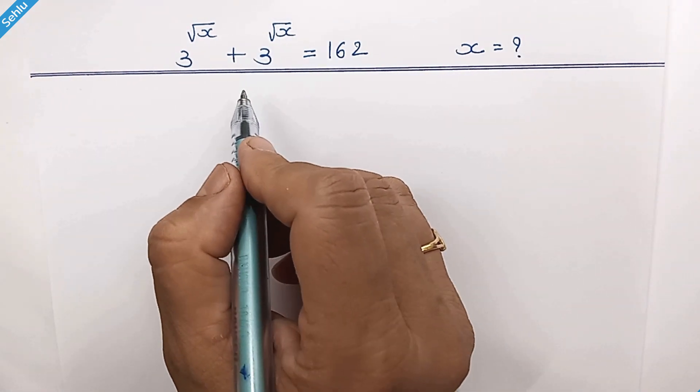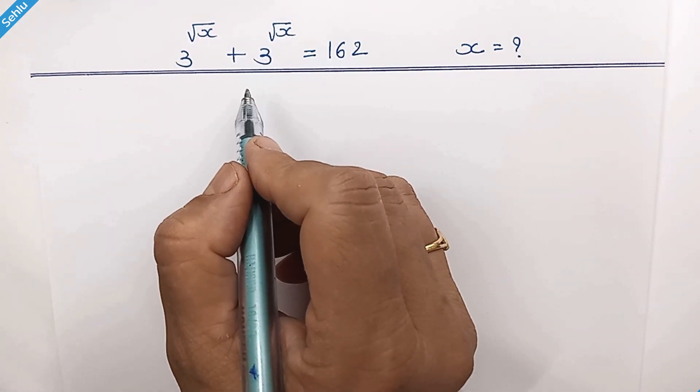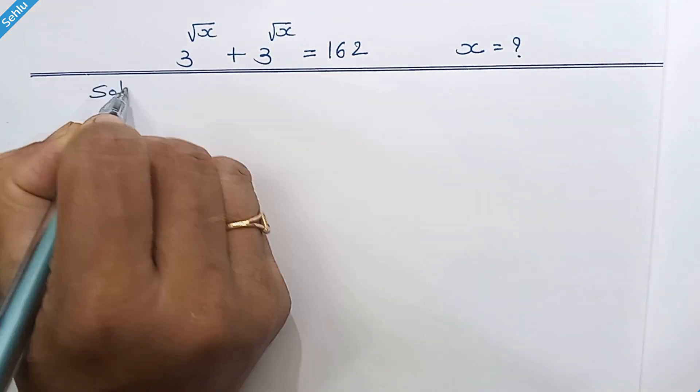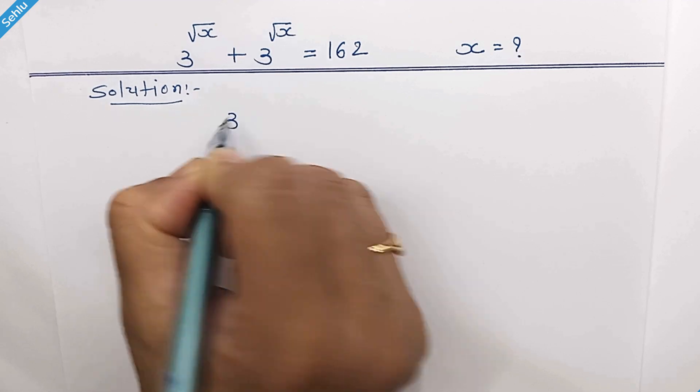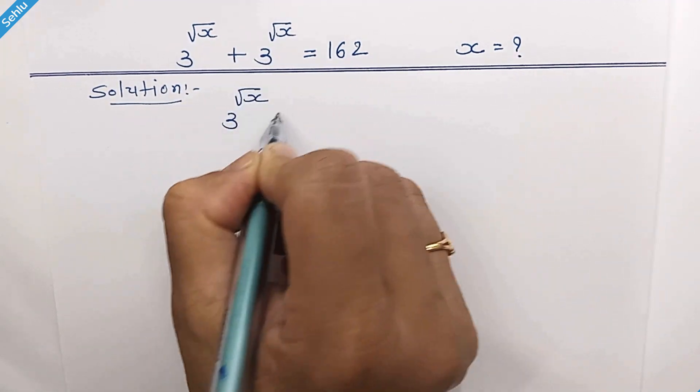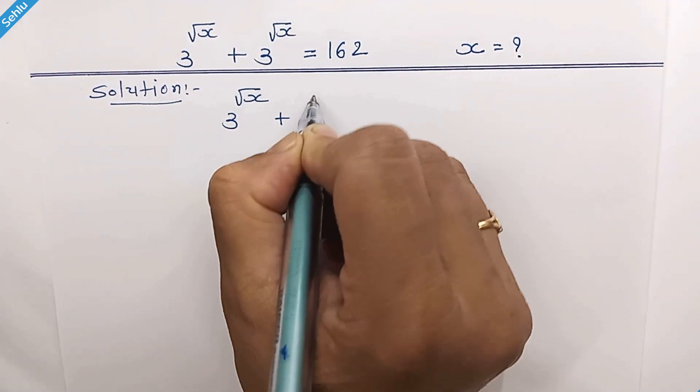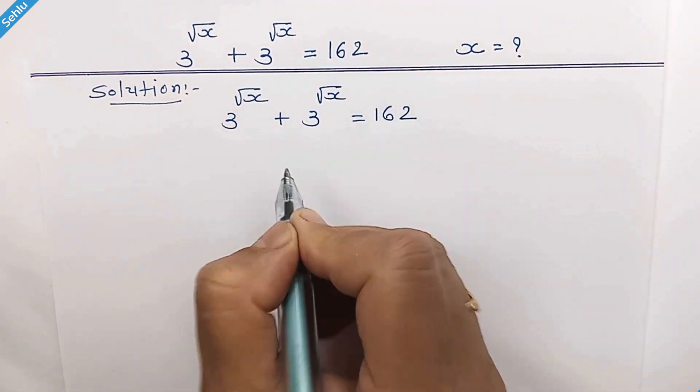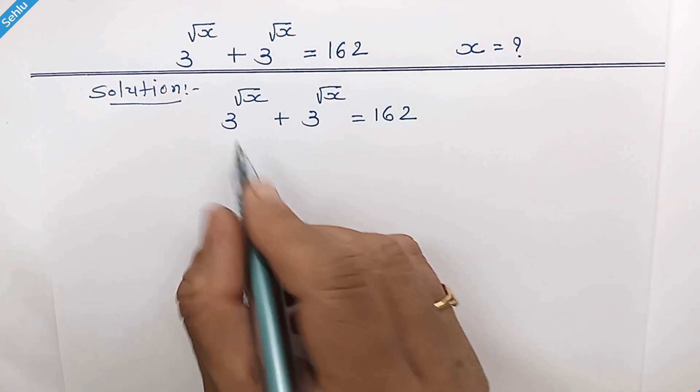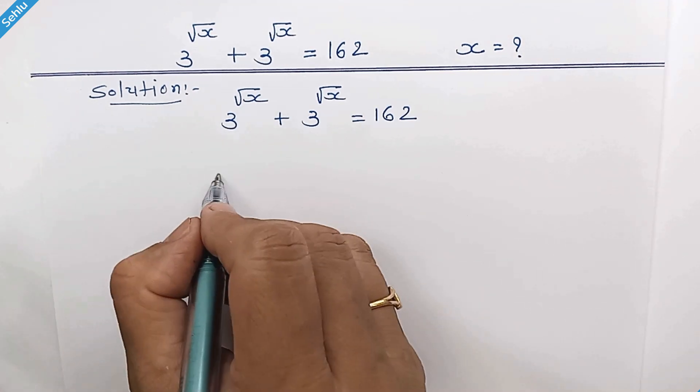Hello friends, nice exponential problem. Let's begin to solve this. The question is 3^√x + 3^√x = 162. What we can do here is factor out 3^√x.